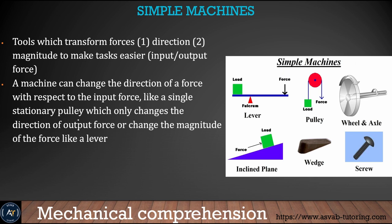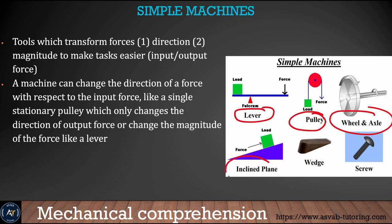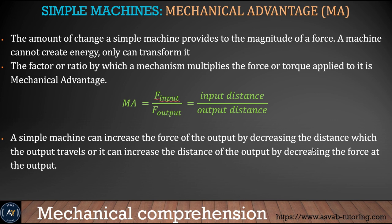Simple machines make your life simpler or easier. There are basically six different types of simple machines: lever, pulley, wheel and axle, inclined plane, wedge, and screw. We'll learn the mechanical advantage of each. The definition of mechanical advantage is force input over force output, the same as input distance over output distance.